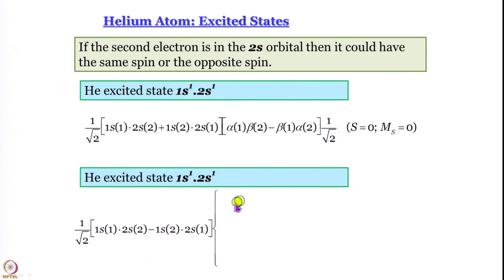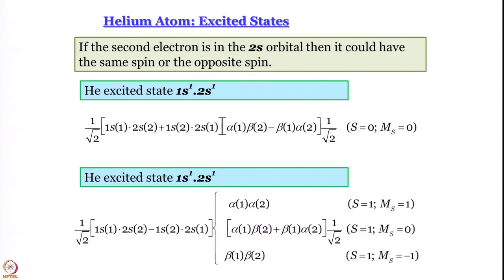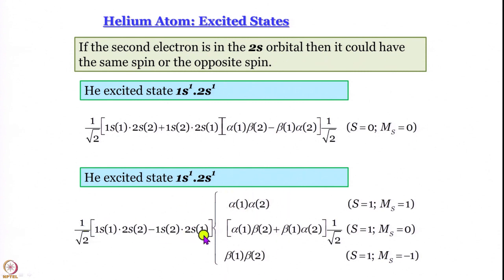For the antisymmetric spatial part — where there is a minus sign — we have to multiply by one of the symmetric spin functions: alpha(1)alpha(2), or beta(1)beta(2), or (1/√2)[alpha(1)beta(2) + beta(1)alpha(2)]. All three can be multiplied. So from the symmetric spatial part we generate a single wave function, whereas from the antisymmetric spatial part we generate three wave functions by multiplying by one of the three different symmetric spin parts.